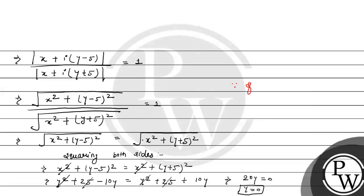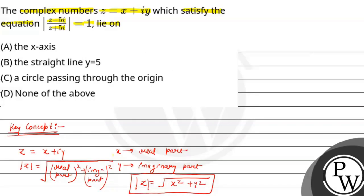So our conclusion is: if y equals 0, then z lies on the x-axis. This is the right answer. Checking the options, option A, the x-axis, is the correct answer. Hope you understood it well. Best of luck.